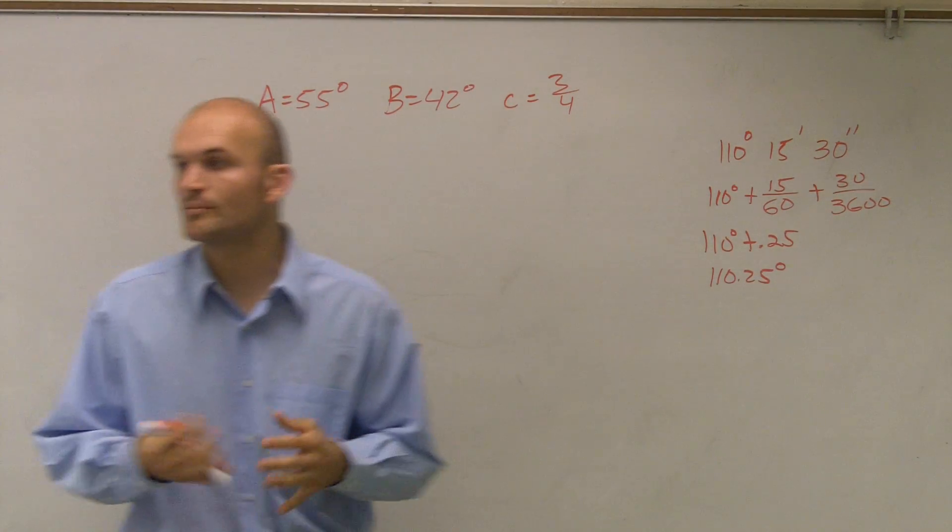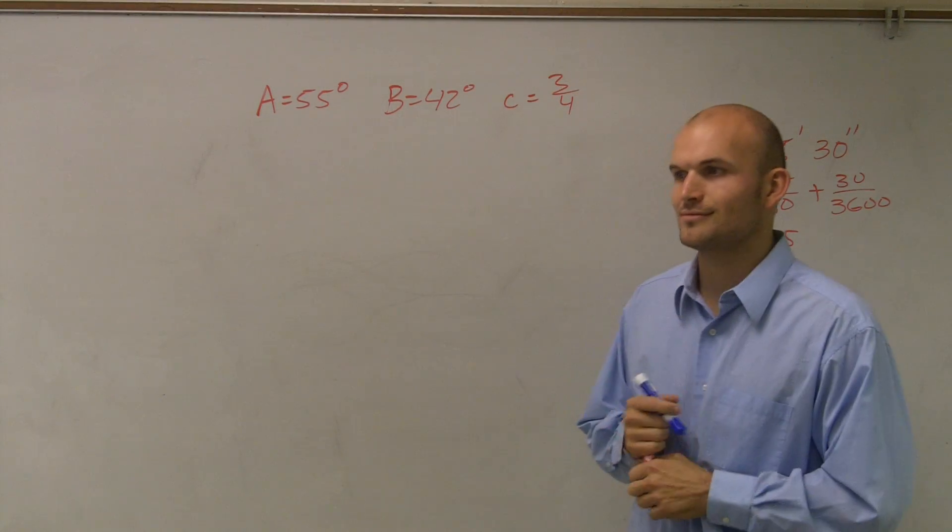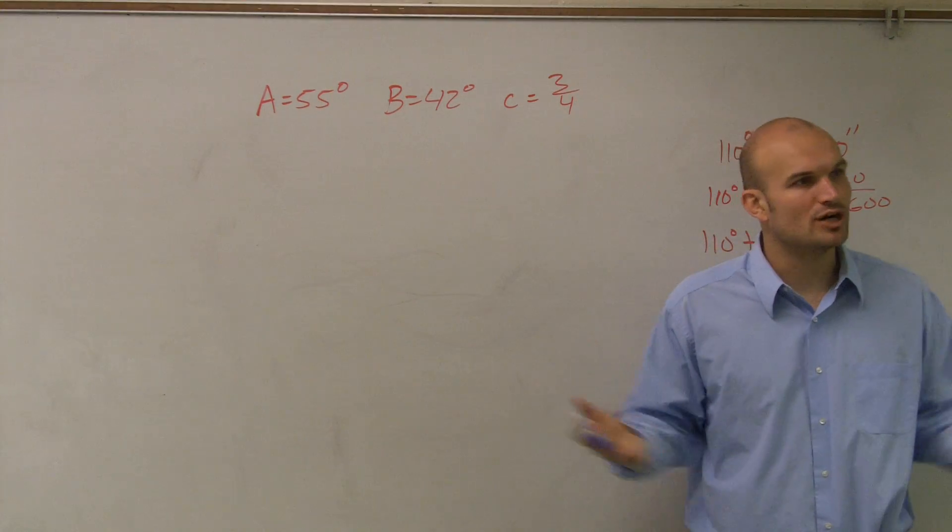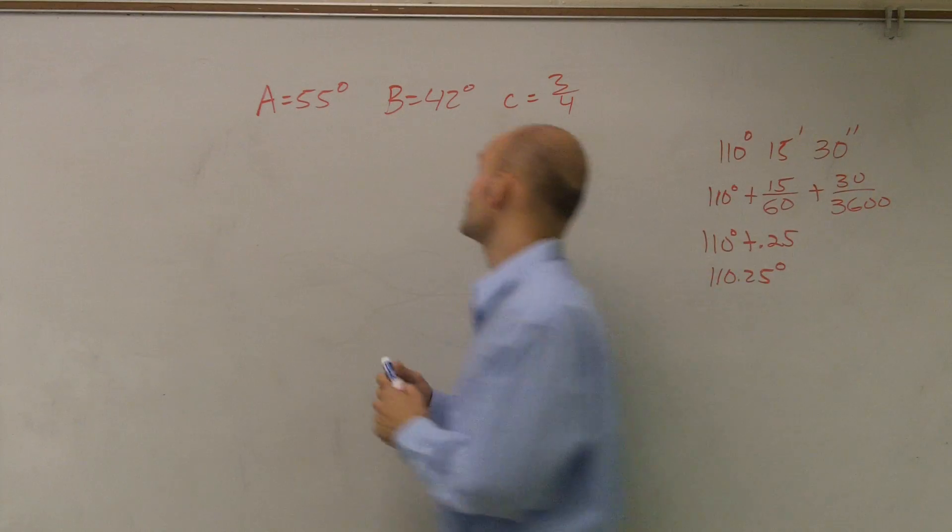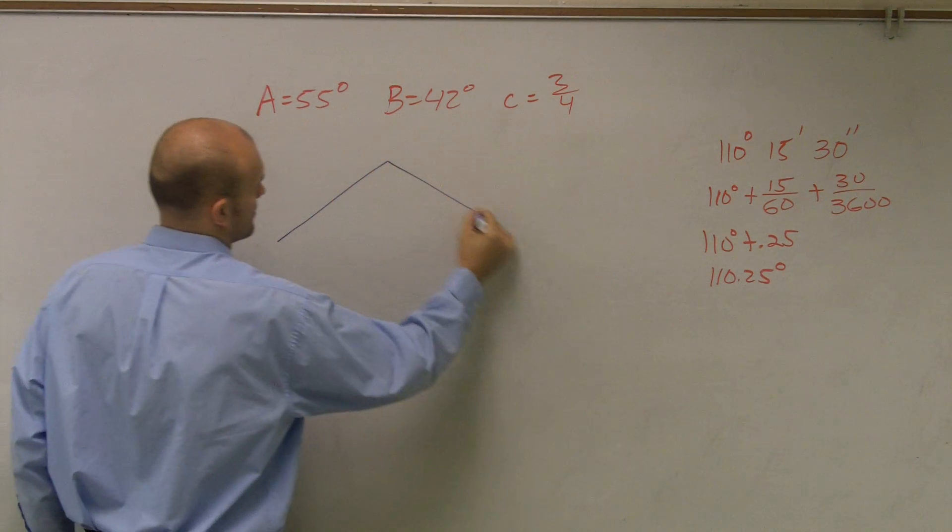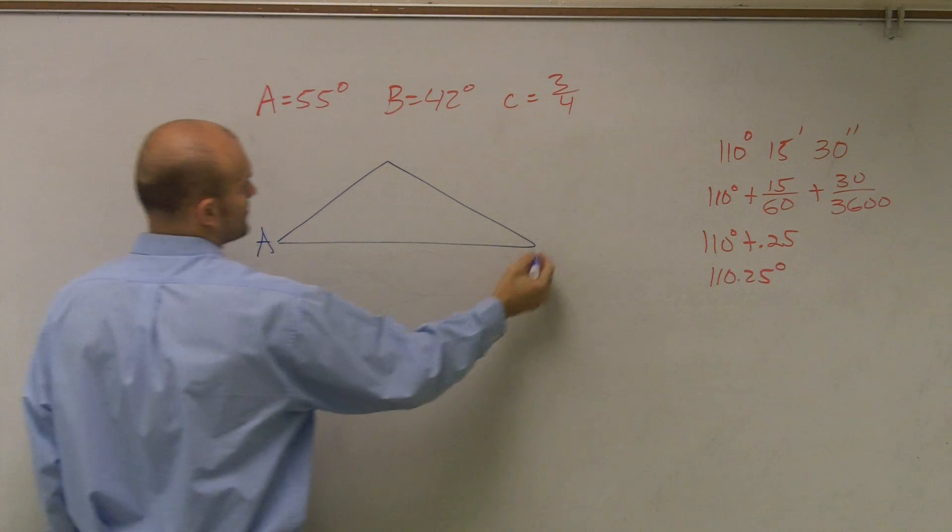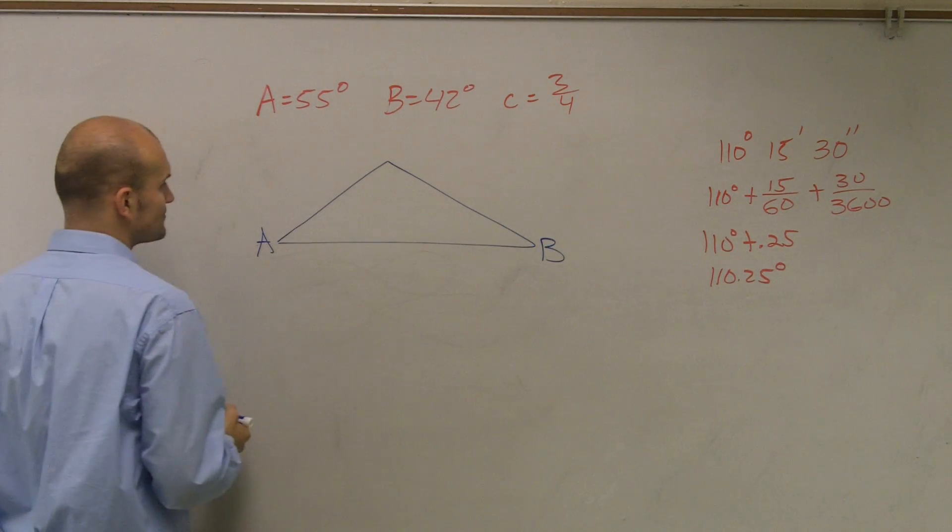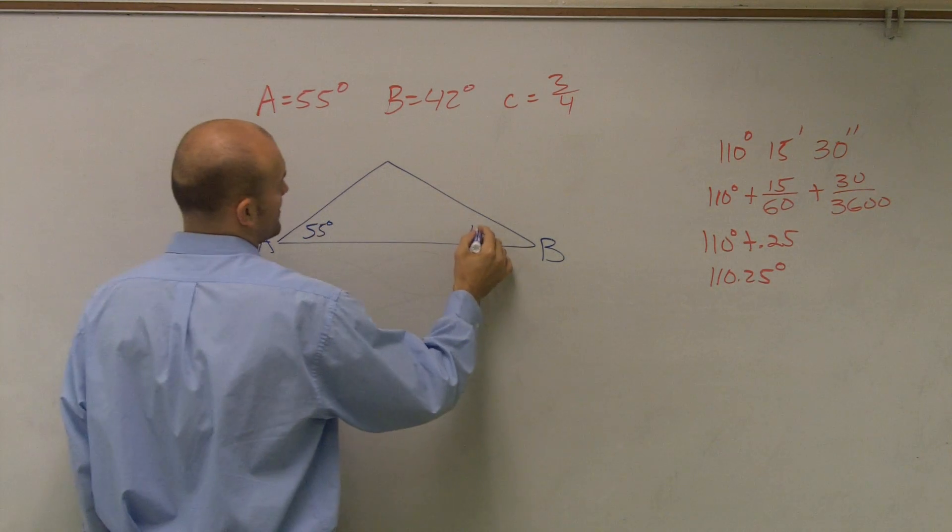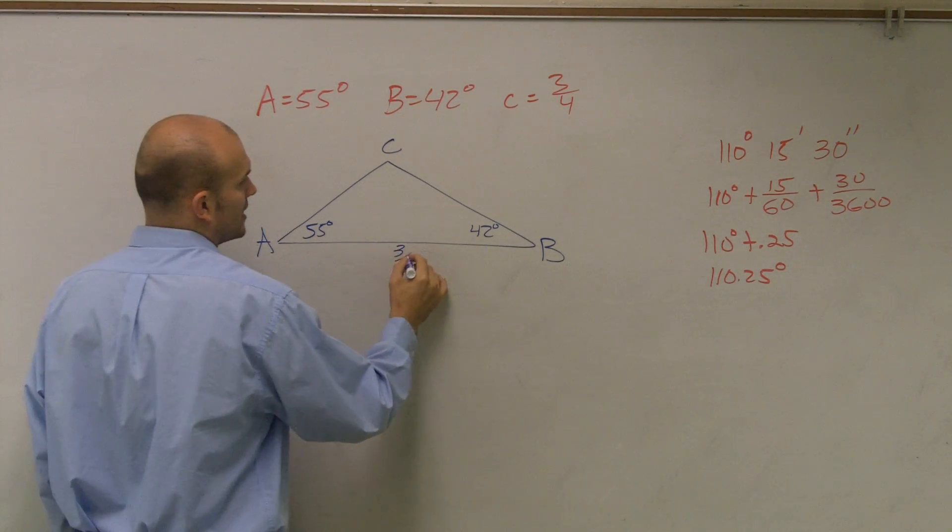The first thing I always want to do, whenever I'm working on these types of problems, is draw a triangle that would kind of mimic what this looks like. So it looks like I have two acute angles. I'll draw something like this. Here's A, here's B. A is 55 degrees, B is going to be 42 degrees. C, I don't know what it is, but I know what the length is.